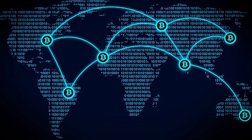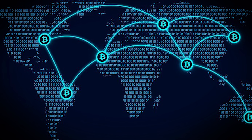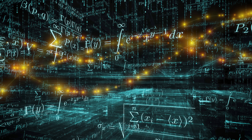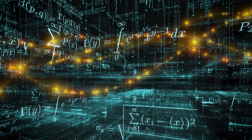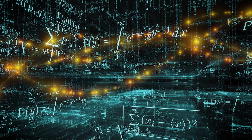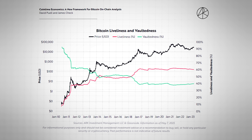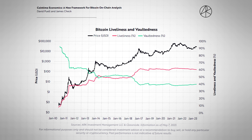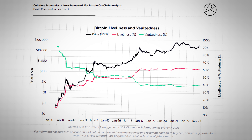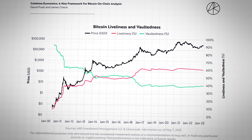The second part of the report explains how all this coin-time economic stuff can be used. The authors introduce two more concepts: liveliness, which measures how active the Bitcoin network is, and vaultedness, which measures how dormant it is. Liveliness is measured by dividing the total number of coin-blocks destroyed by the total number of coin-blocks created, whereas vaultedness is measured by dividing the total number of coin-blocks stored by the total number of coin-blocks created. The graph shows that the Bitcoin network became more lively after the 2017 bull market, and this liveliness seems to be increasing.